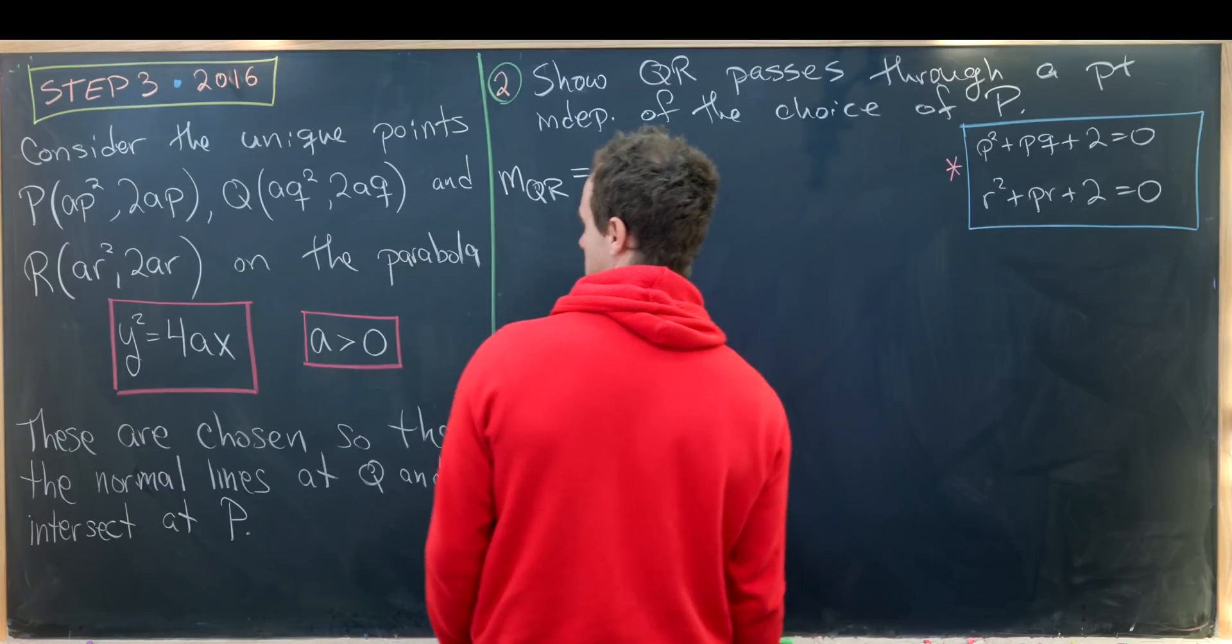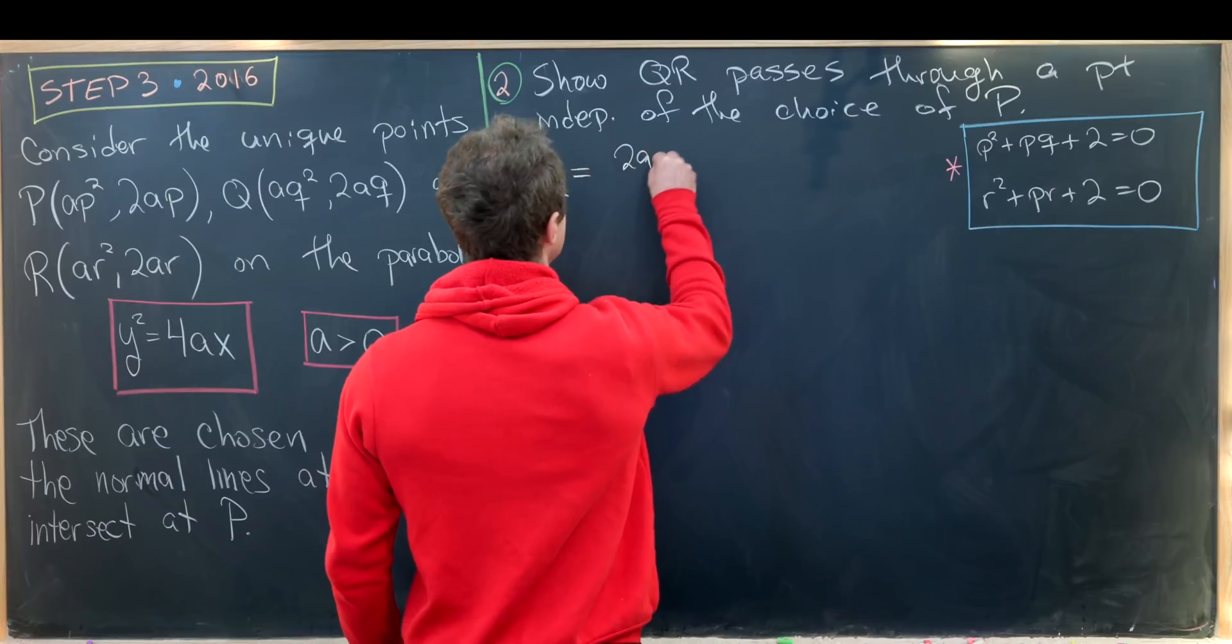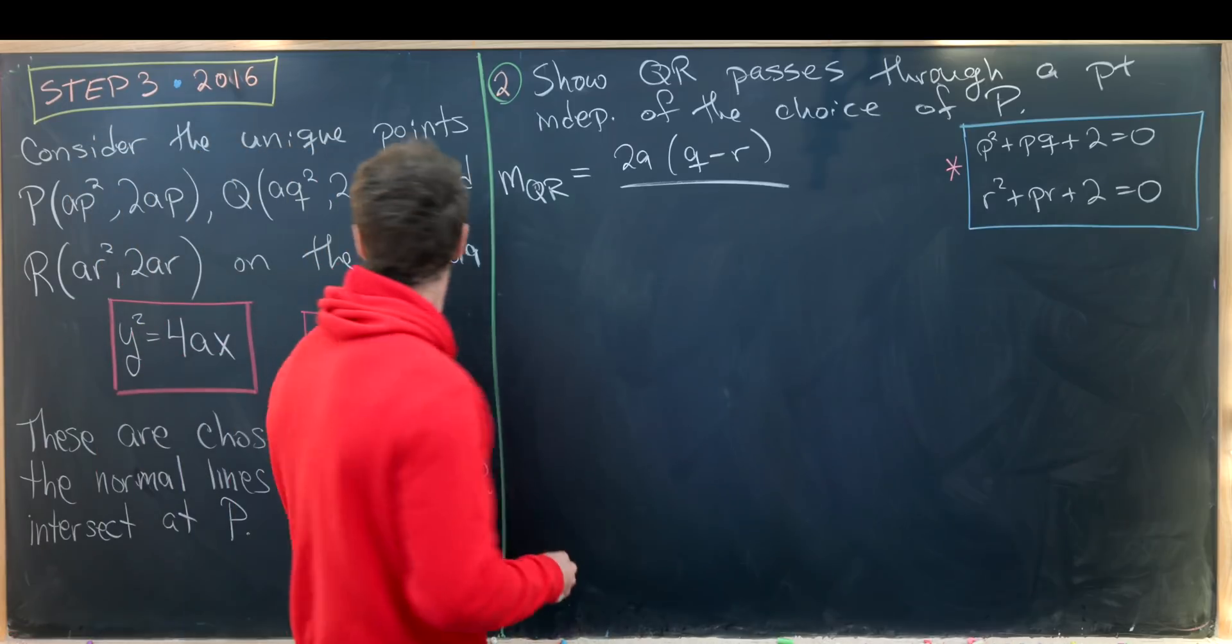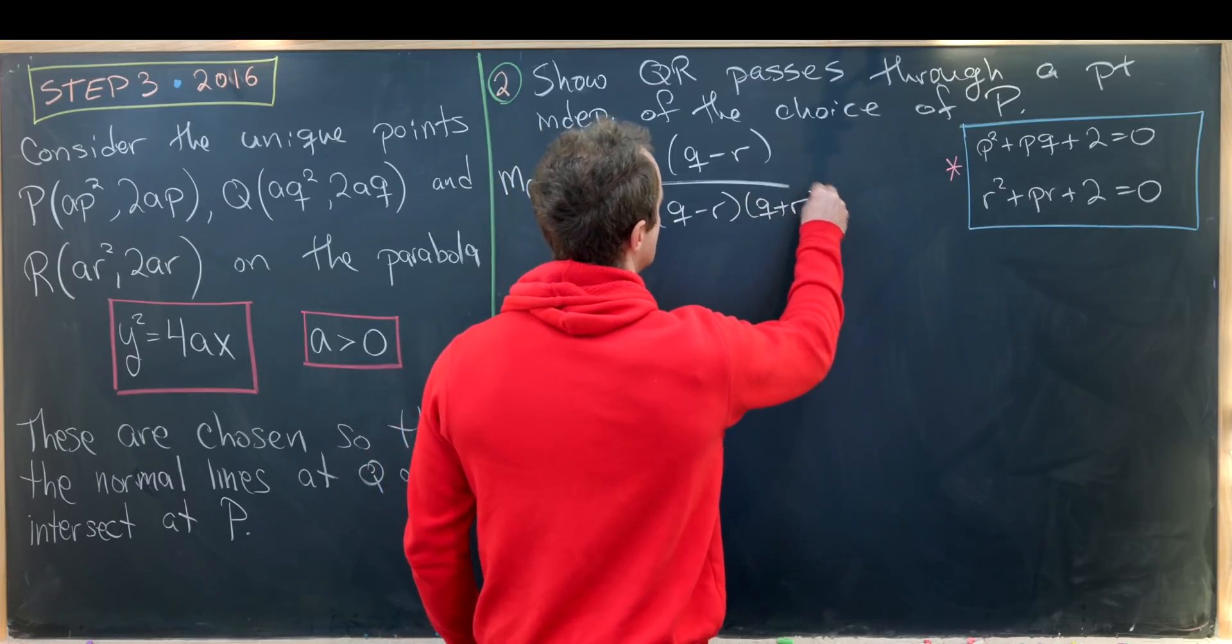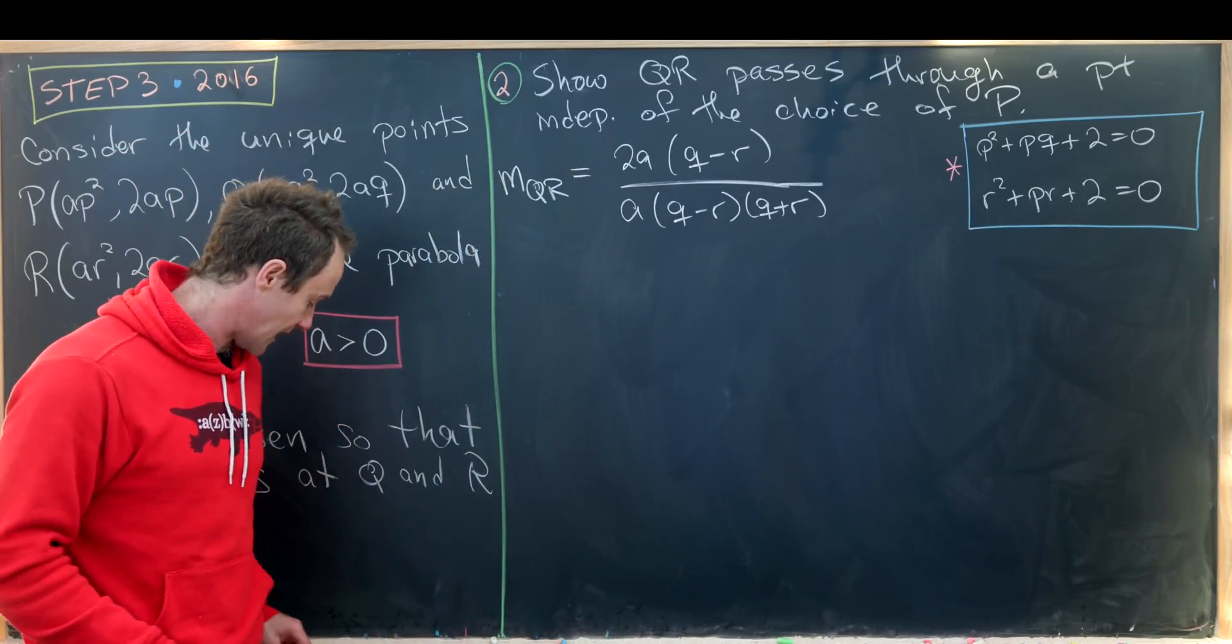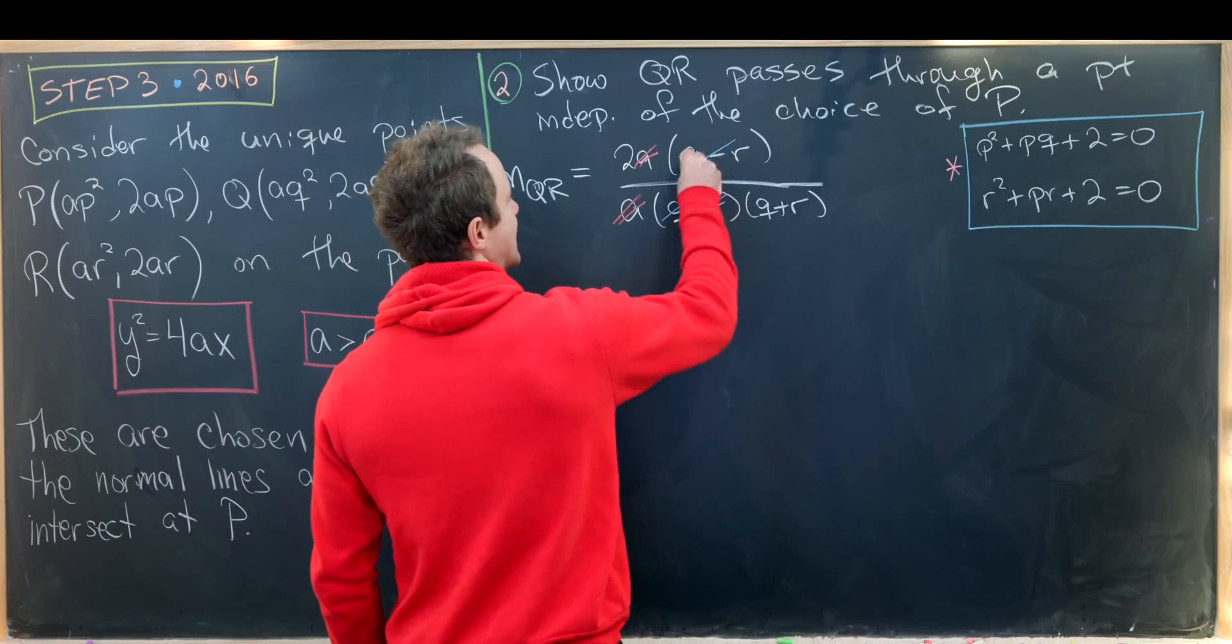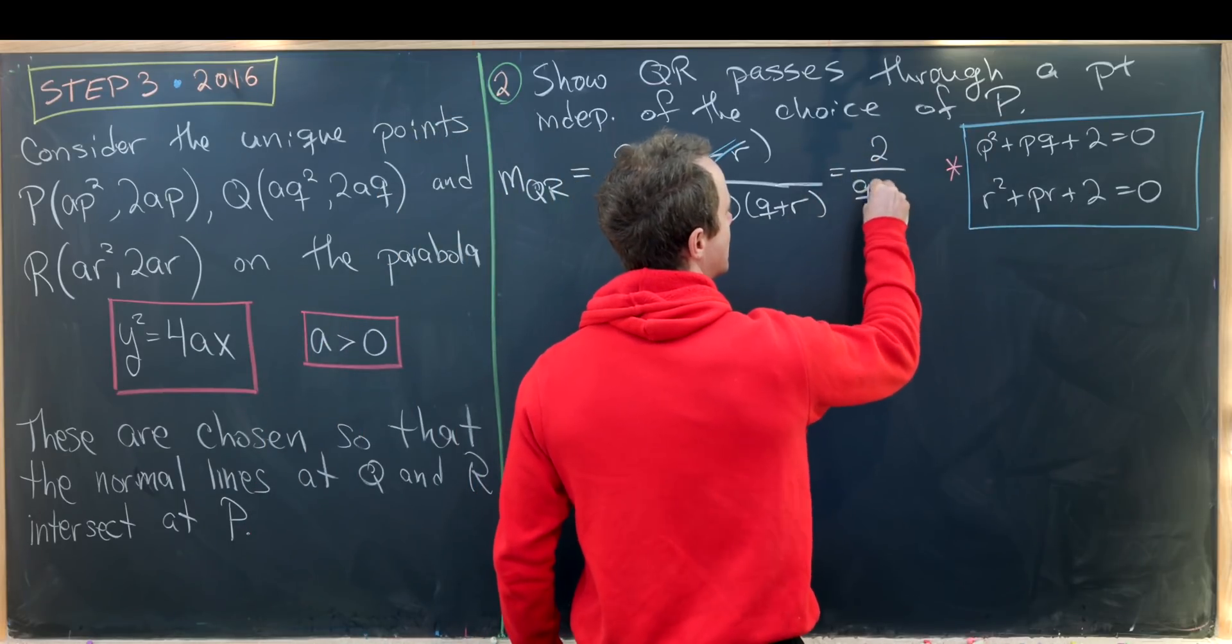I'll call this slope M_QR. Again we'll use change of y over change of x. We'll have in the numerator 2A(Q-R) after factoring things out much like we did on the last board. And then in the denominator we will have A(Q-R)(Q+R) again after simplification. Now let's notice that a bunch of stuff cancels here. This A cancels with this A and then Q-R cancels with Q-R leaving us with 2/(Q+R).